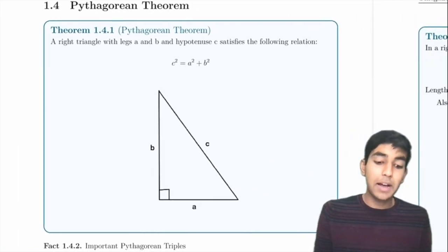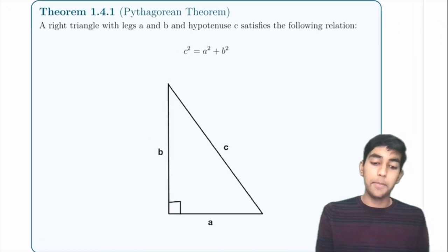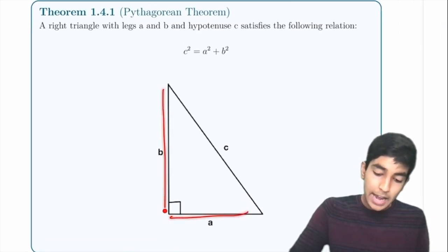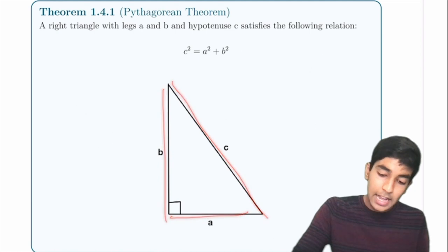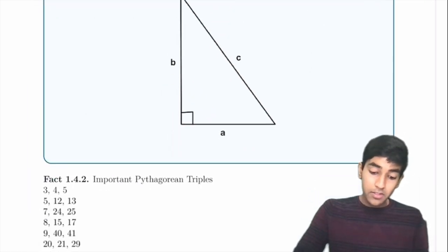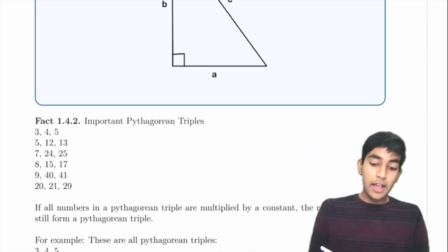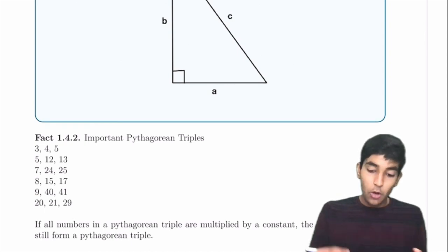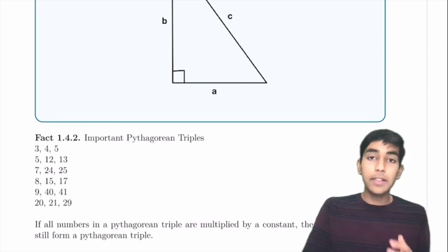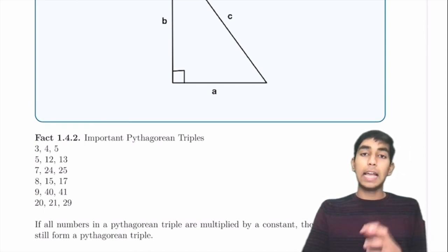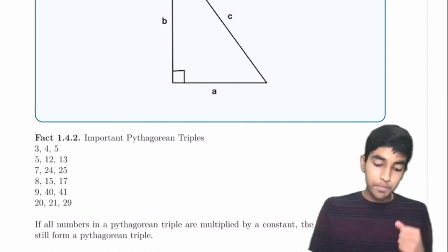Next we have the Pythagorean theorem. A right triangle with legs A and B and hypotenuse C satisfies A² + B² = C². It's useful to know Pythagorean triples — three numbers that can be the sides of a right triangle. Some common ones are 3-4-5, 5-12-13, 7-24-25, 8-15-17.